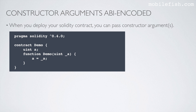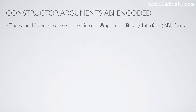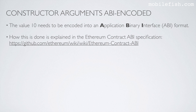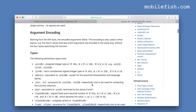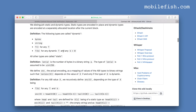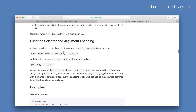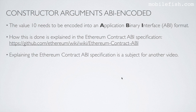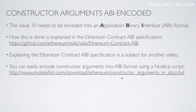When you deploy your Solidity contract you can pass constructor arguments. In this demo contract the constructor has only one argument — you can pass one value of the type UINT. For example, constructor argument value 10. The value 10 needs to be encoded into an Application Binary Interface format, as explained in the Ethereum contract ABI specification. You can easily encode constructor arguments into an ABI format using a Node.js script, which you can find at the provided location.